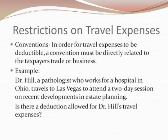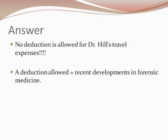The first restriction on travel expenses concerns conventions. In order for travel expenses to be deductible, a convention must be directly related to the taxpayer's trade or business. For example: Dr. Hill, a pathologist who works for a hospital in Ohio, travels to Las Vegas to attend a two-day session on recent developments in estate planning. No deduction is allowed for Dr. Hill's travel expenses. However, a deduction would be allowed if the convention dealt entirely with recent developments in forensic medicine, since that is directly related to his work as a pathologist.